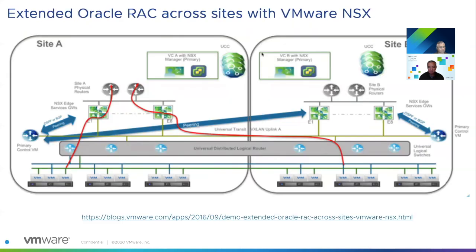A key NSX use case is extending Oracle RAC across sites. Oracle RAC requires active networking from each respective site, with all nodes needing IPs in the same segment. When nodes are placed across multiple sites, NSX provides the solution to allow the same network segment in both data centers. A blog and demo linked from the slide detail the extended Oracle RAC implementation.